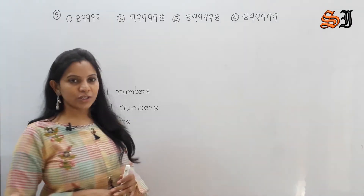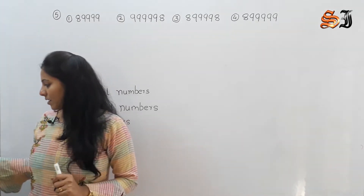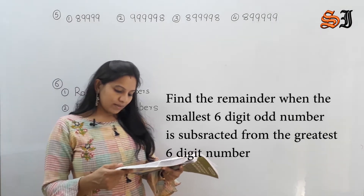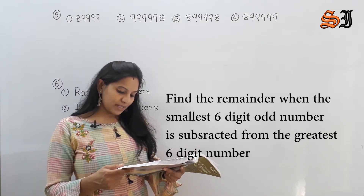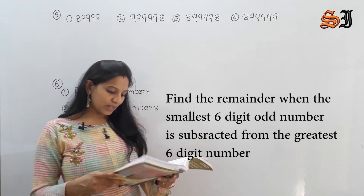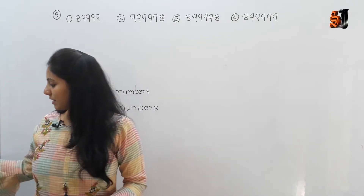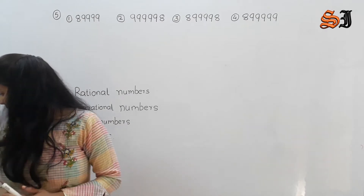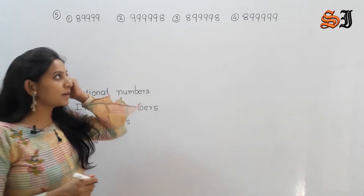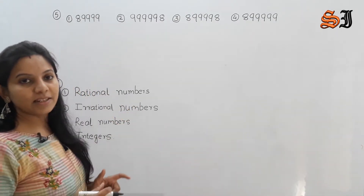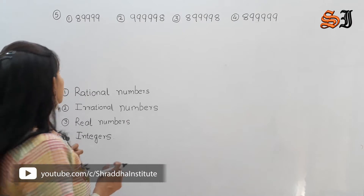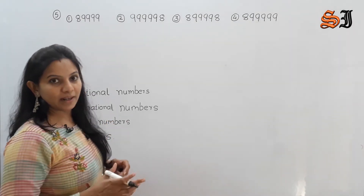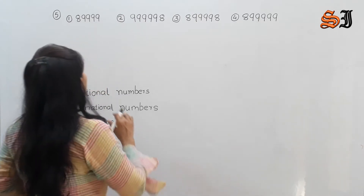We will start the 5th question. Find the remainder when the smallest 6-digit odd number is subtracted from the greatest 6-digit number. Remainder means subtracted.